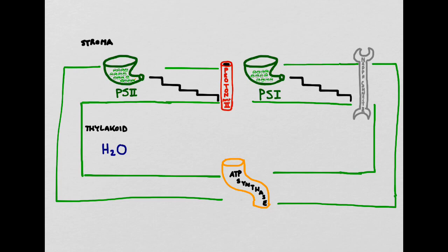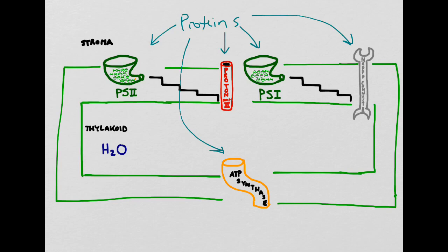Now we're going to talk about the light-dependent reactions which occur in the thylakoid. Here is my thylakoid, and all of the structures that are embedded in the thylakoid membrane are going to be made of protein. Each one of them has a very specific function in the light-dependent reactions.